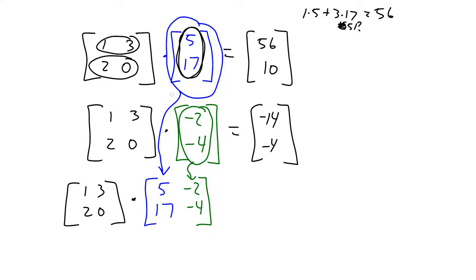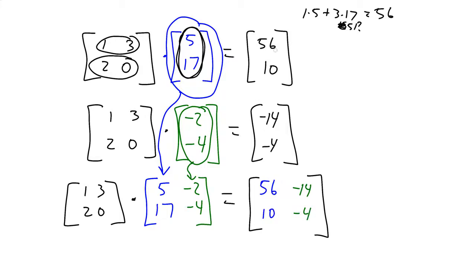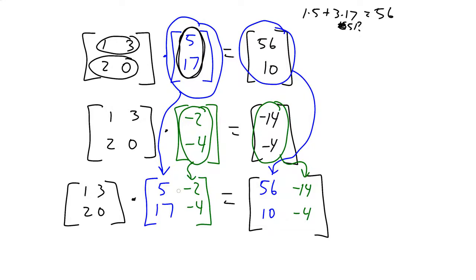I've just made a matrix out of those two column vectors. The answer is going to be [56, 10] and [negative 14, negative 4] — because this vector here is the left column of our answer, and this vector here is the right column of our answer. So multiplying a matrix by another matrix, you can think of it as just doing a bunch of those column-wise matrix-vector operations.